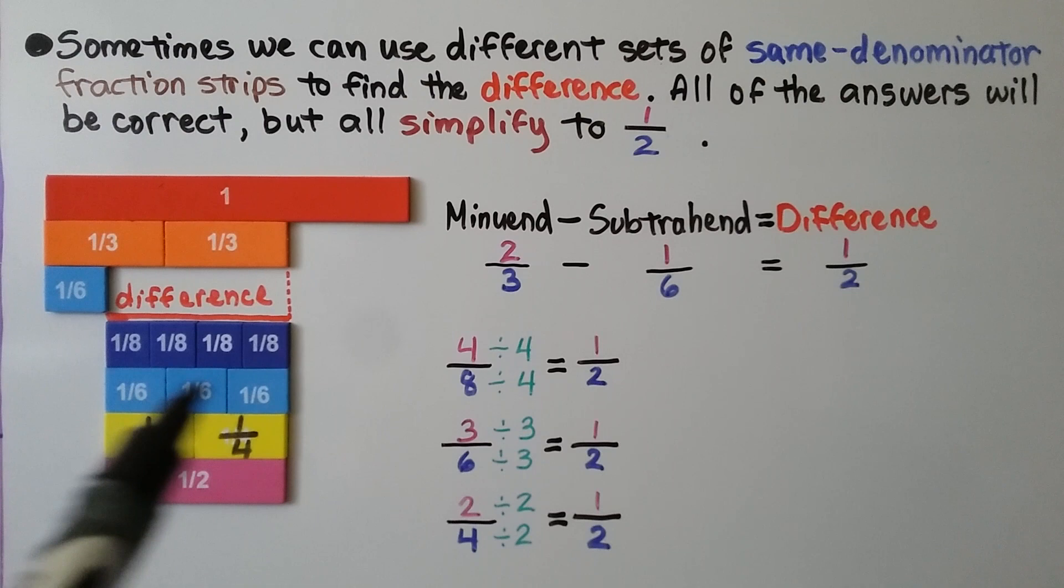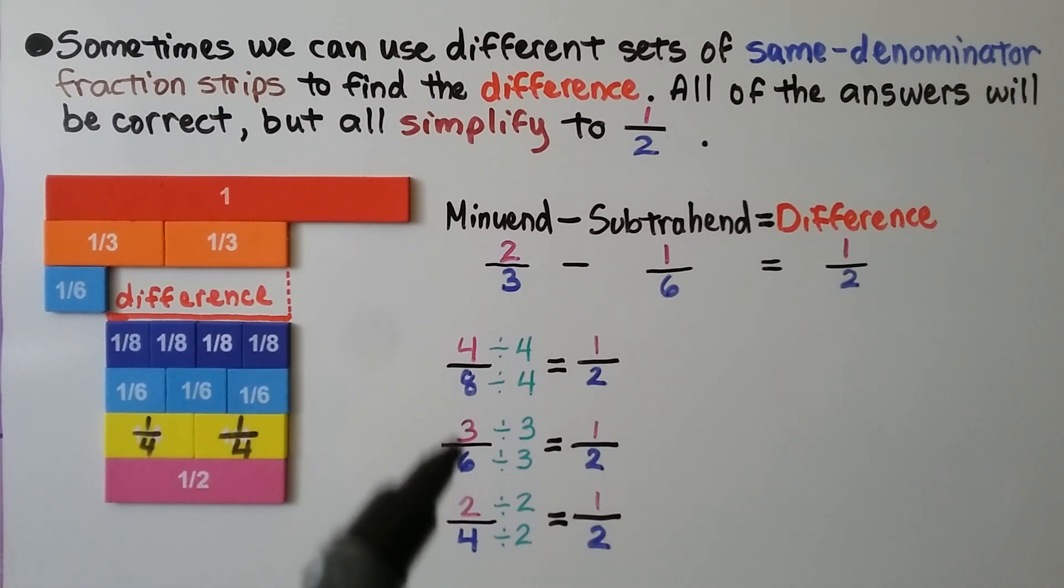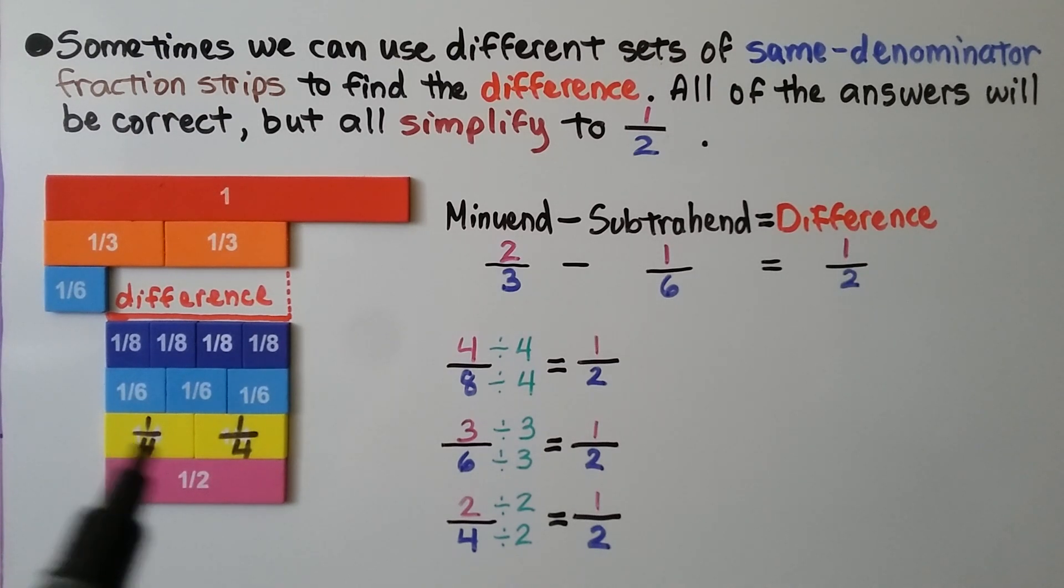Three-sixths fits perfectly. When we divide the numerator and denominator by the greatest common factor, it equals one-half. And for two-fourths, it fits perfectly. Dividing the numerator and denominator by their greatest common factor, two, it equals one-half. So, two-thirds minus one-sixth equals one-half.